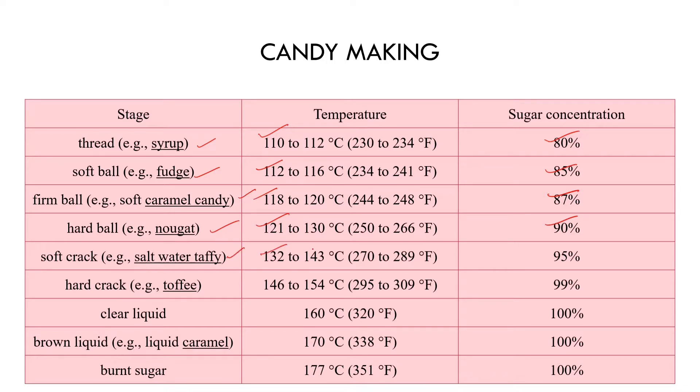Softball stage is 130 to 143 degrees centigrade at 95%. Hardball is 121 to 130 degrees centigrade with 90% sugar present. Clear liquid at 160 degrees centigrade is 100%. Brown liquid caramel forms at 170 degrees centigrade, 100% sugar. Burnt sugar at 177 degrees centigrade, 100% sugar is present. If you need the temperature, moisture content, and sugar concentration, you can refer to this.